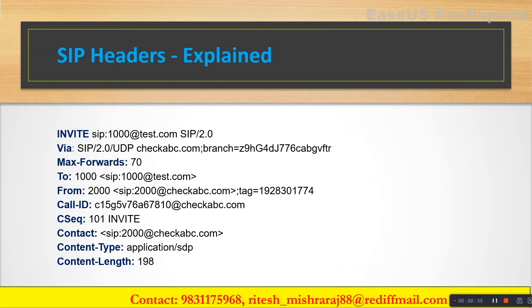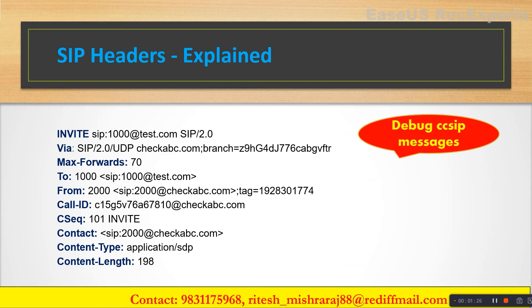And when I say responses, those are 100 Trying, 180 Ringing, 200 OK — all those 1XX, 2XX up to 6XX responses. The most common debug used to see complete SIP messages is 'debug CSIP messages'. This is the most common debug we use to collect SIP logs when we have a SIP call flow. But before analyzing all the SIP logs, we should understand all the SIP headers that you will see in all those requests and responses.